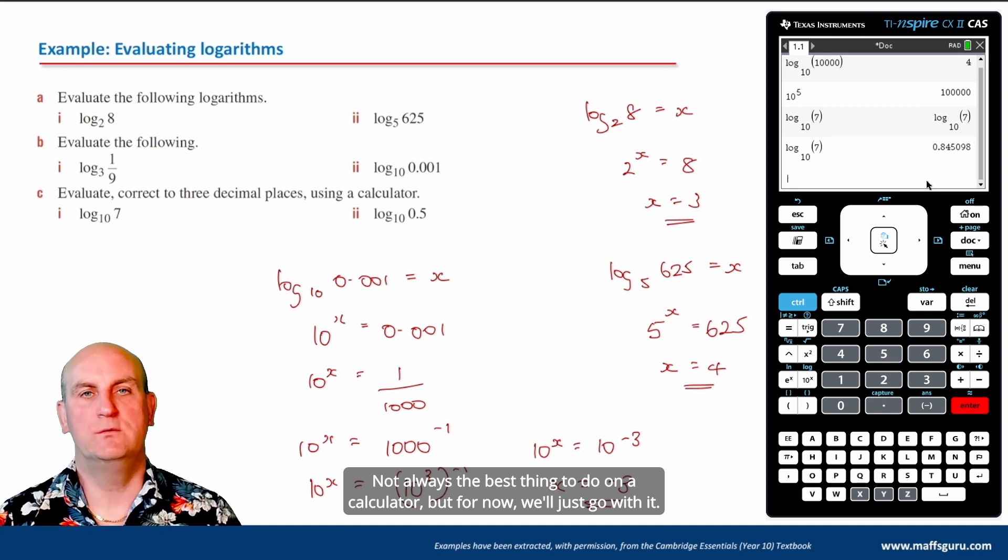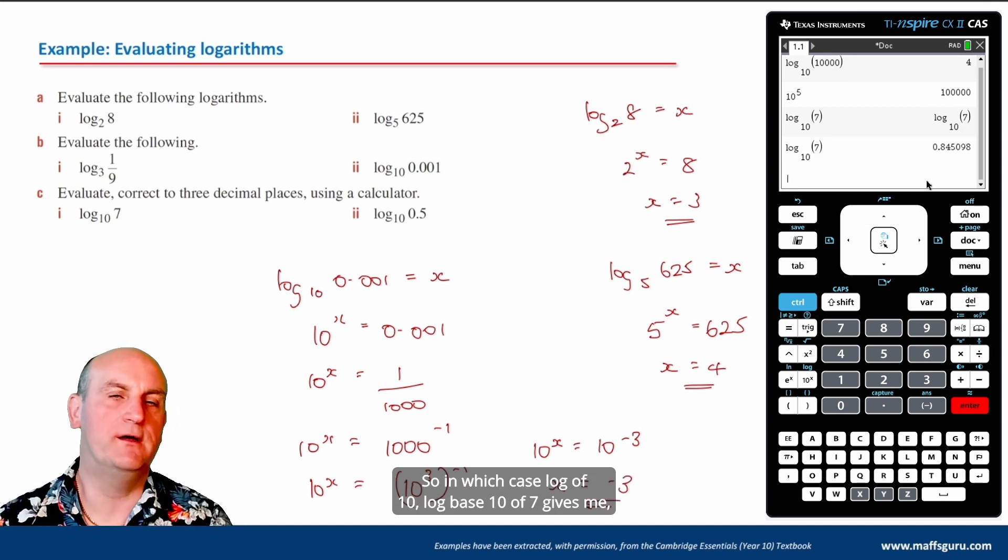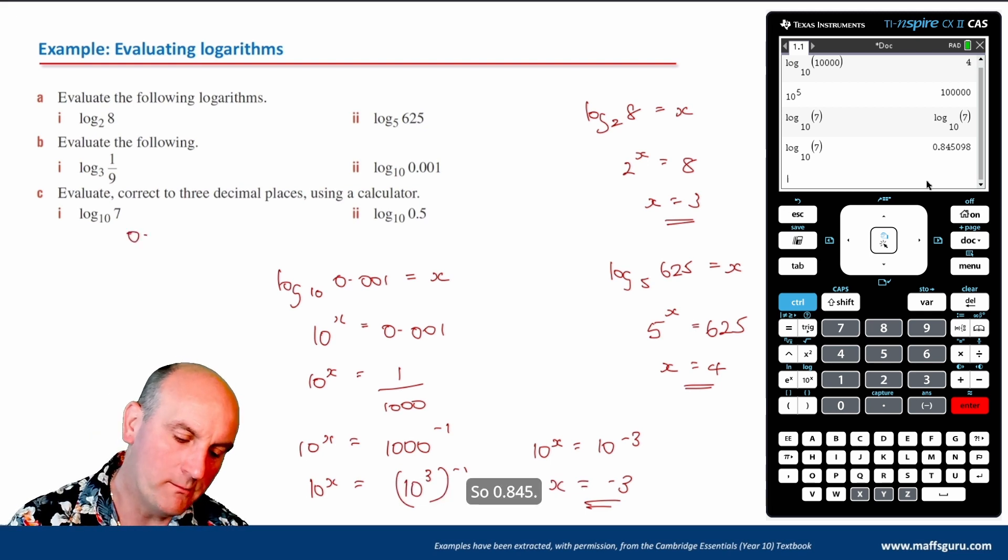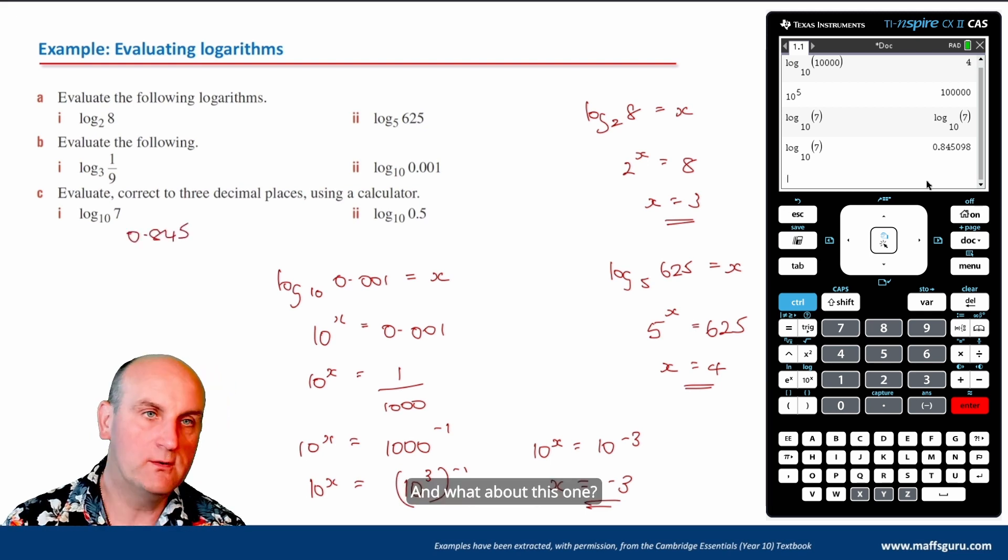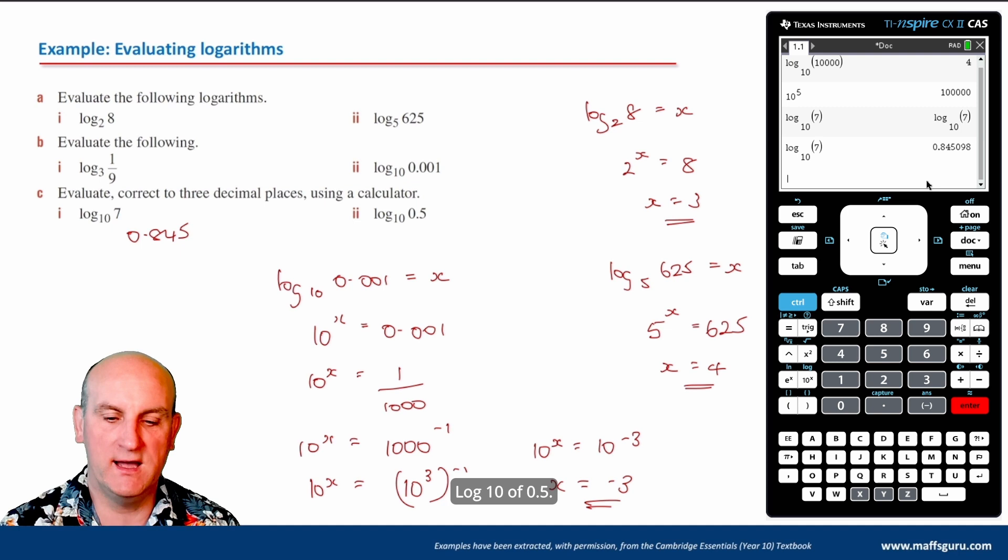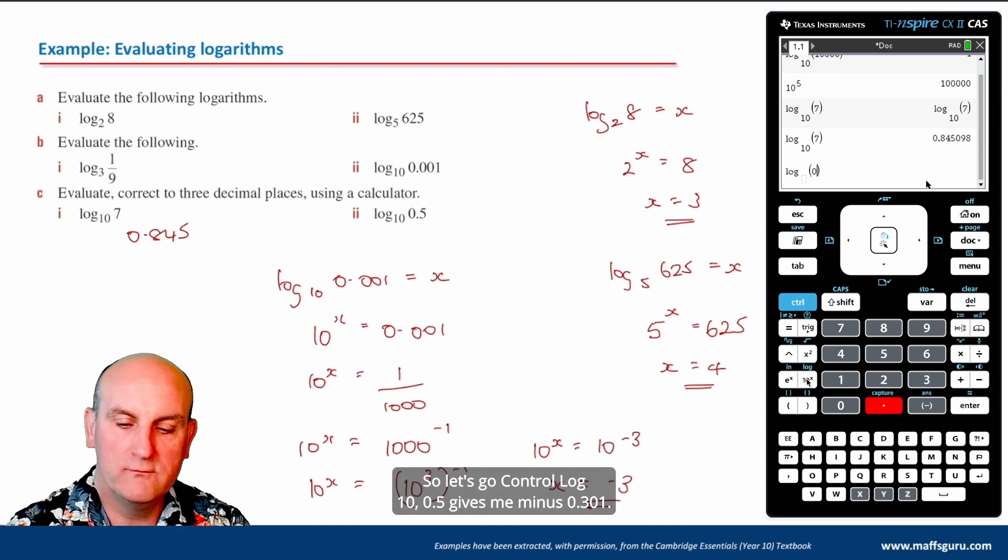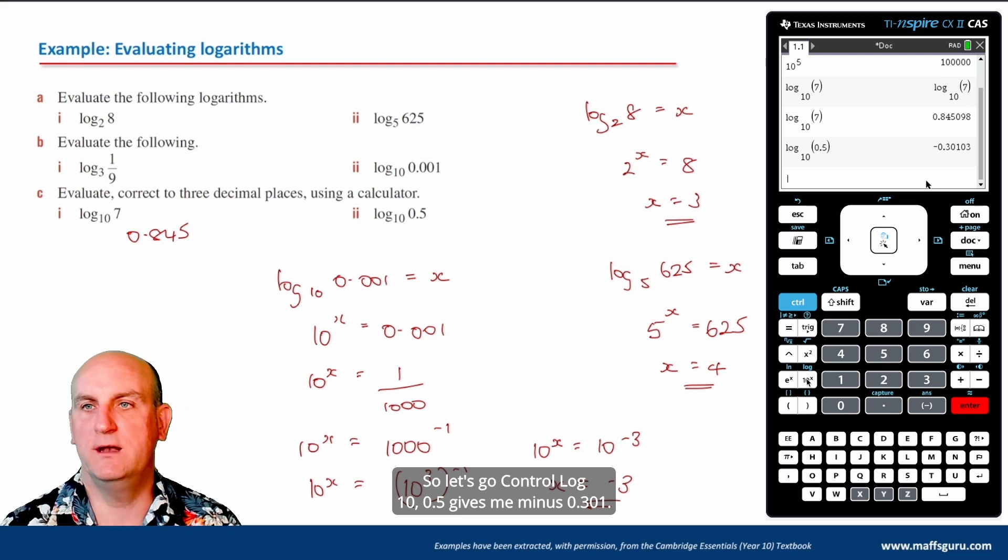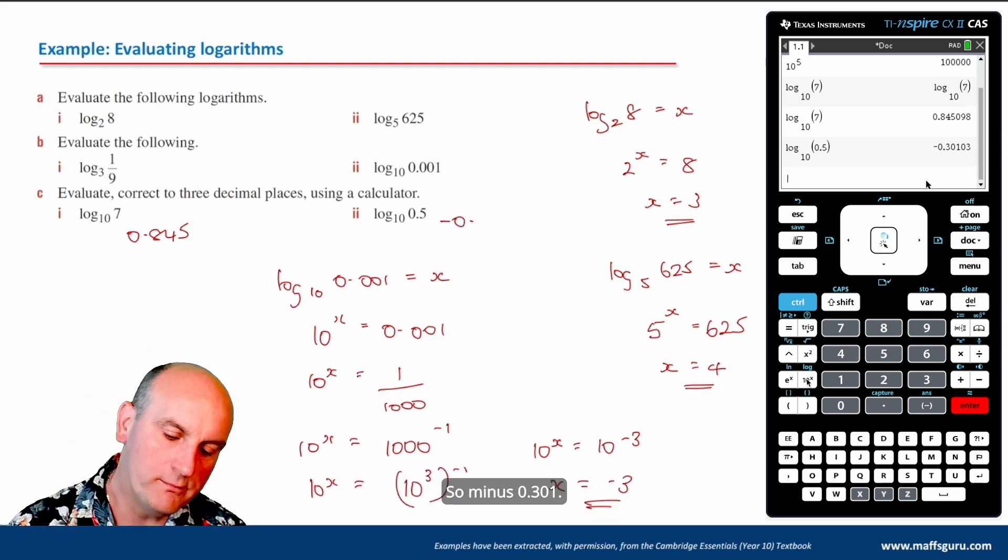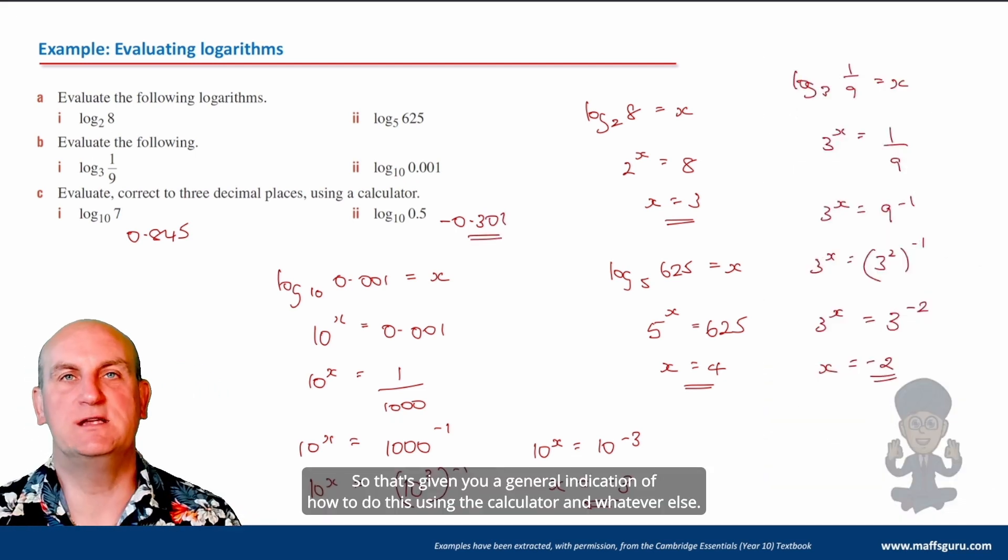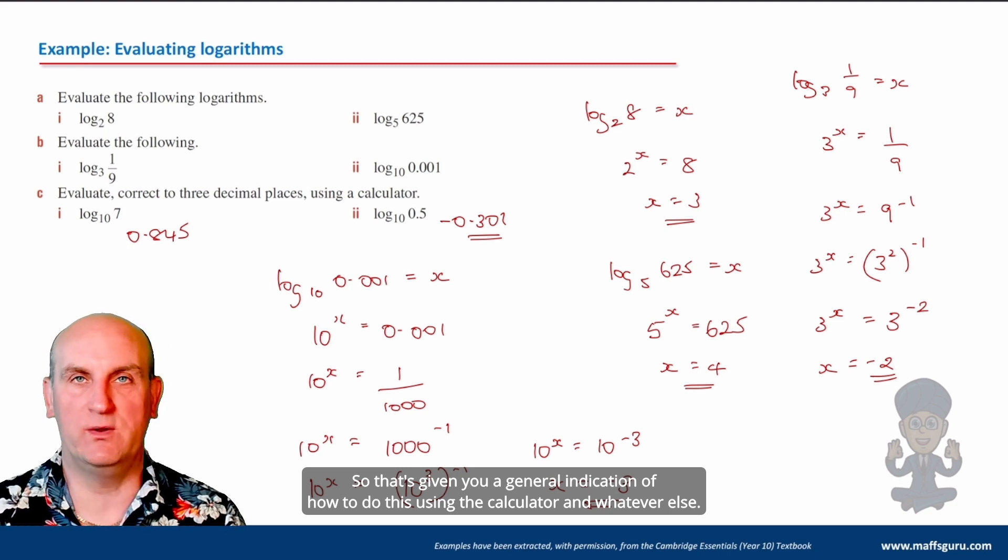Because my calculator is in exact mode. So what I'm going to do is click on here. I'm going to go settings and status, document settings, and where it says calculation mode, I'm going to put in approximate. So in which case log of 10, log base 10 of 7 gives me 0.845. And what about this log 10 of 0.5? So let's go control log 10, 0.5 gives me minus 0.301.